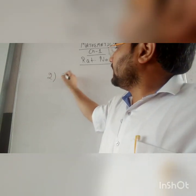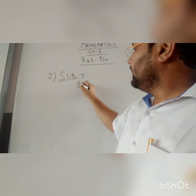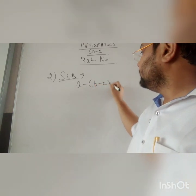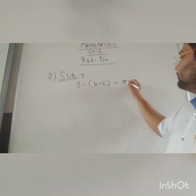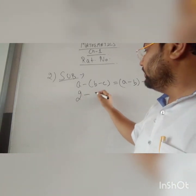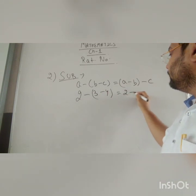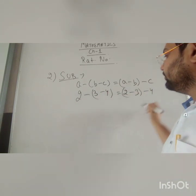Now we will talk about subtraction of whole numbers. In subtraction, what the property says is a minus b minus c should be equal to a minus b minus c. Let's take an example: 2 minus 3 minus 4 should be equal to 2 minus 3 minus 4.